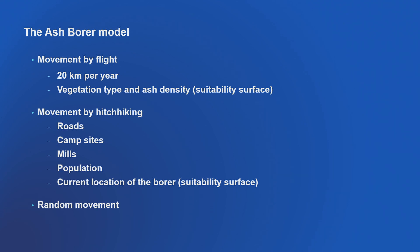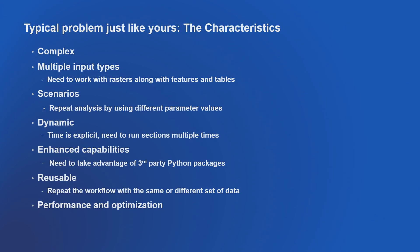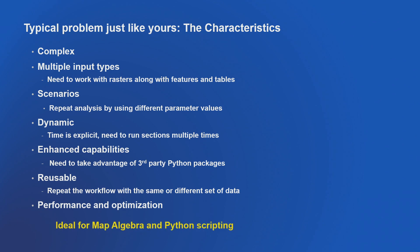We're going to look at hitchhiking. The third way of movement is random movement — movement we can't describe deterministically. Why is this problem complex? It has many types of inputs, you can run many scenarios, it's dynamic because we feed movement from one year into the next. It needs enhanced capabilities beyond ArcGIS and we need to optimize it.